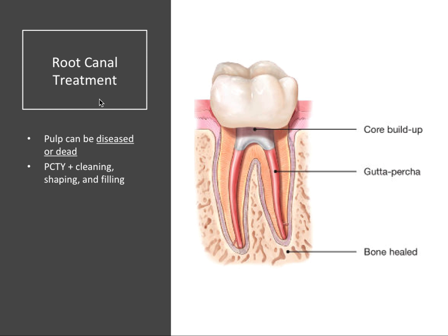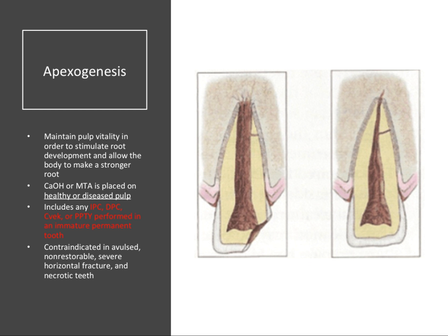Root canal treatment can be performed when the pulp is diseased or dead. It is essentially a pulpectomy where all pulp is removed from both the coronal and radicular segments, followed by cleaning, canal shaping, and then filling with gutta-percha or another obturation material. This was covered in detail in the third video of this series.